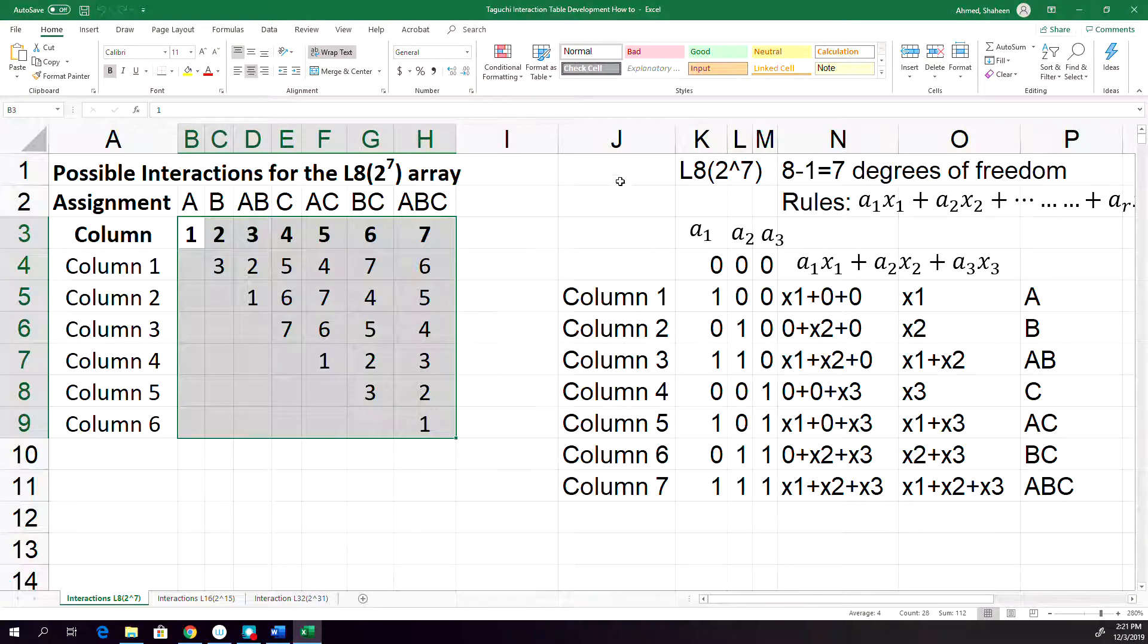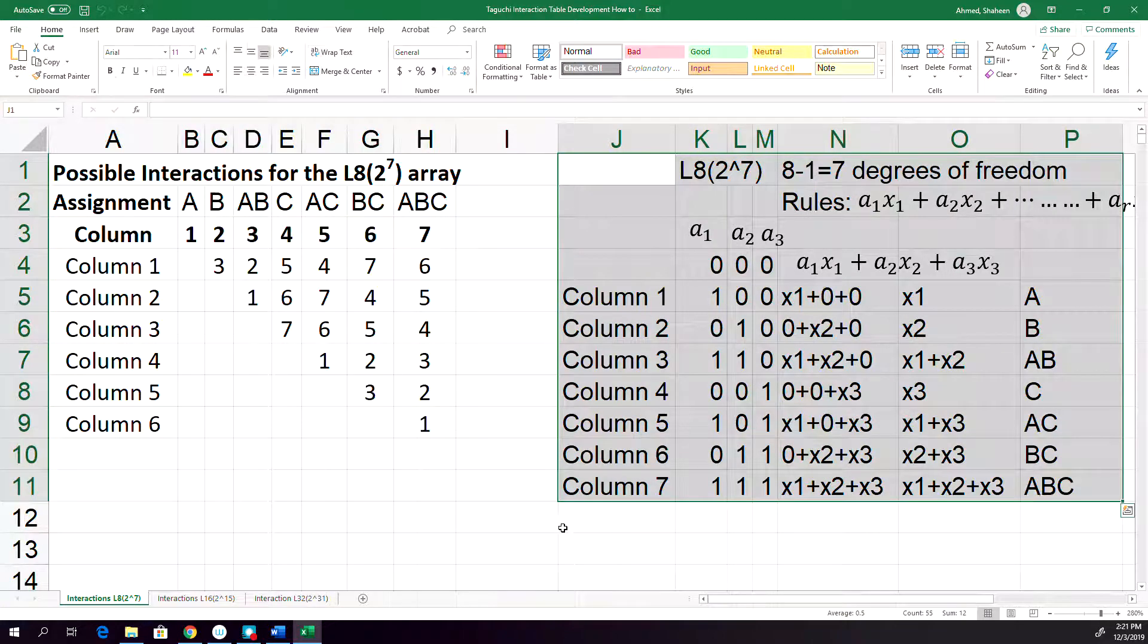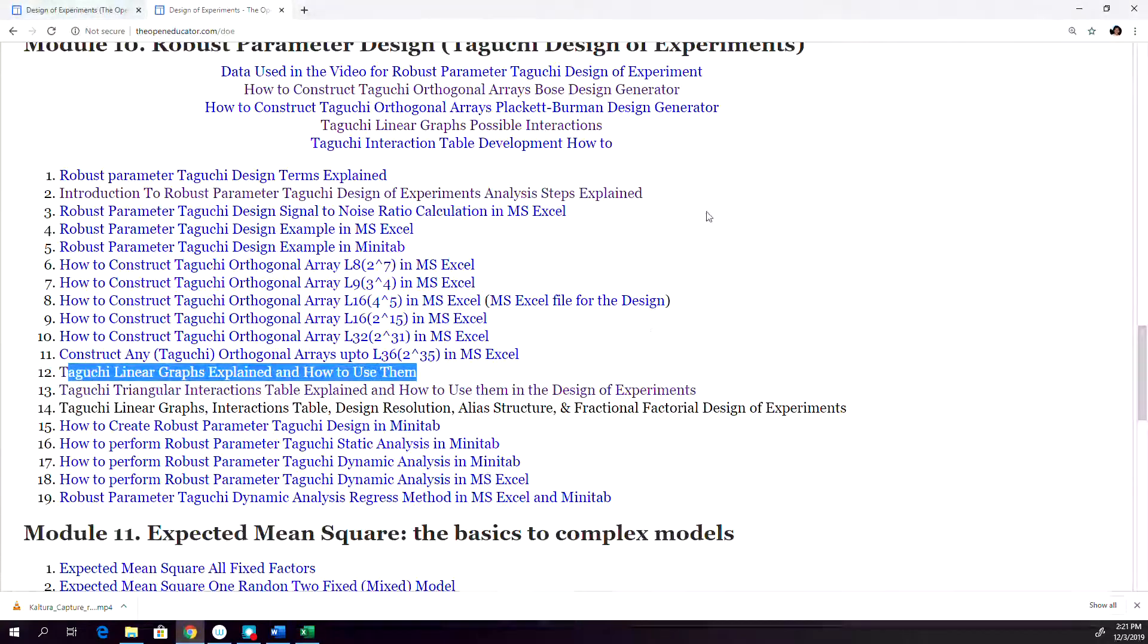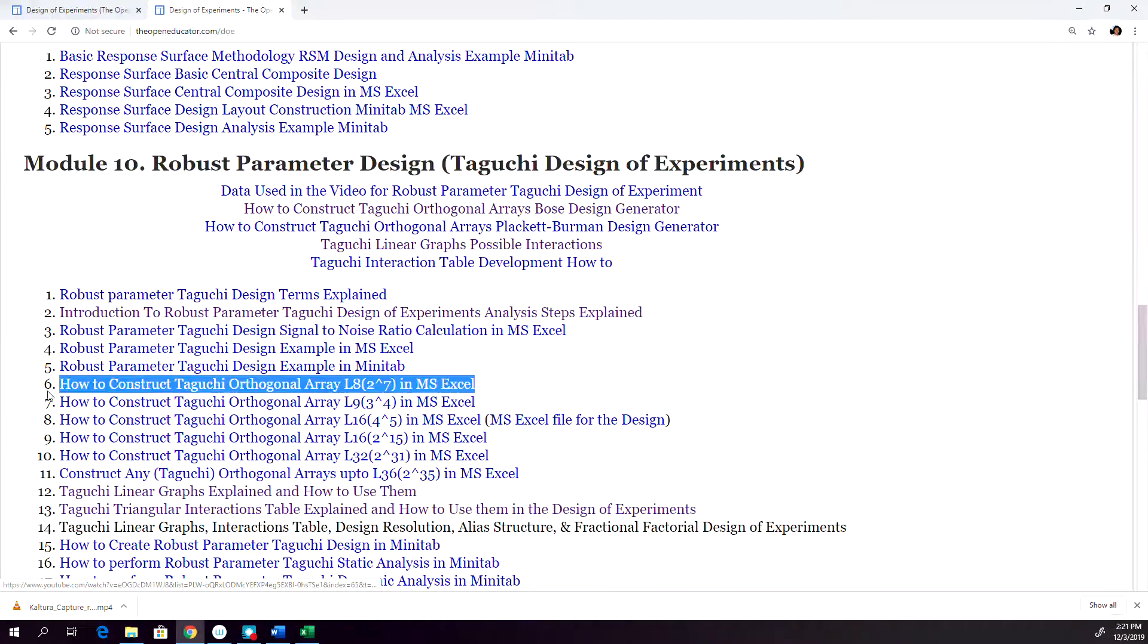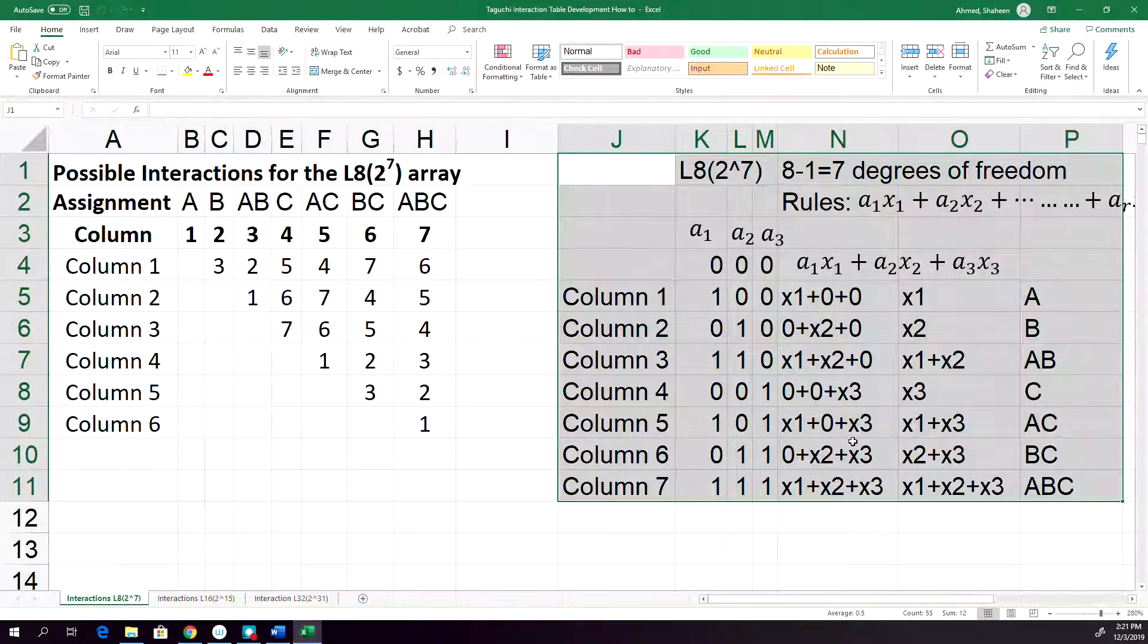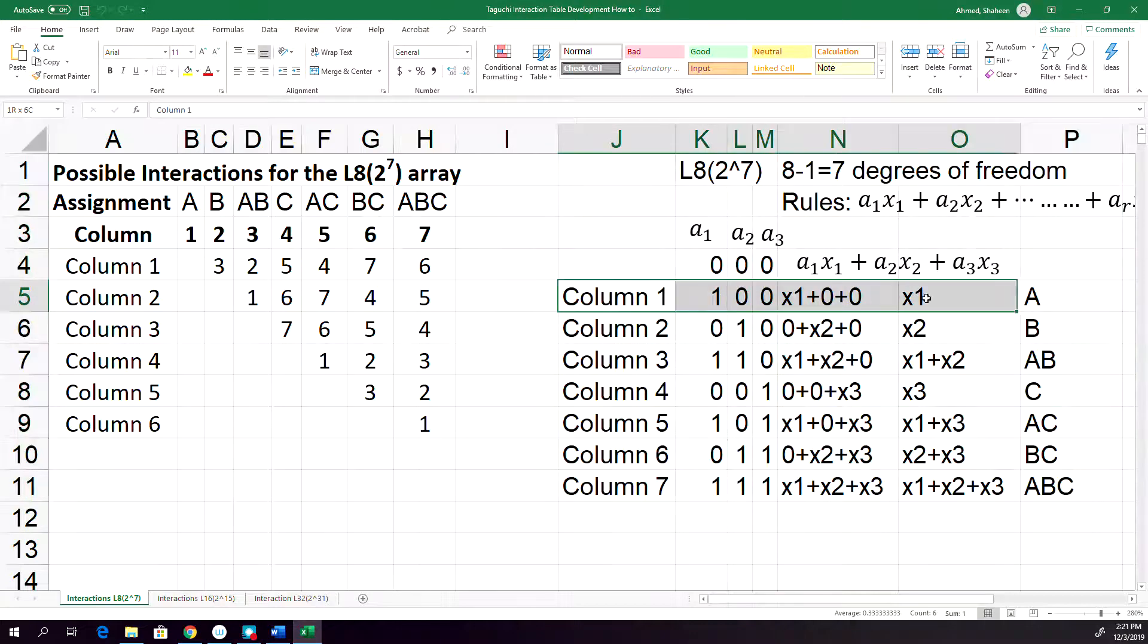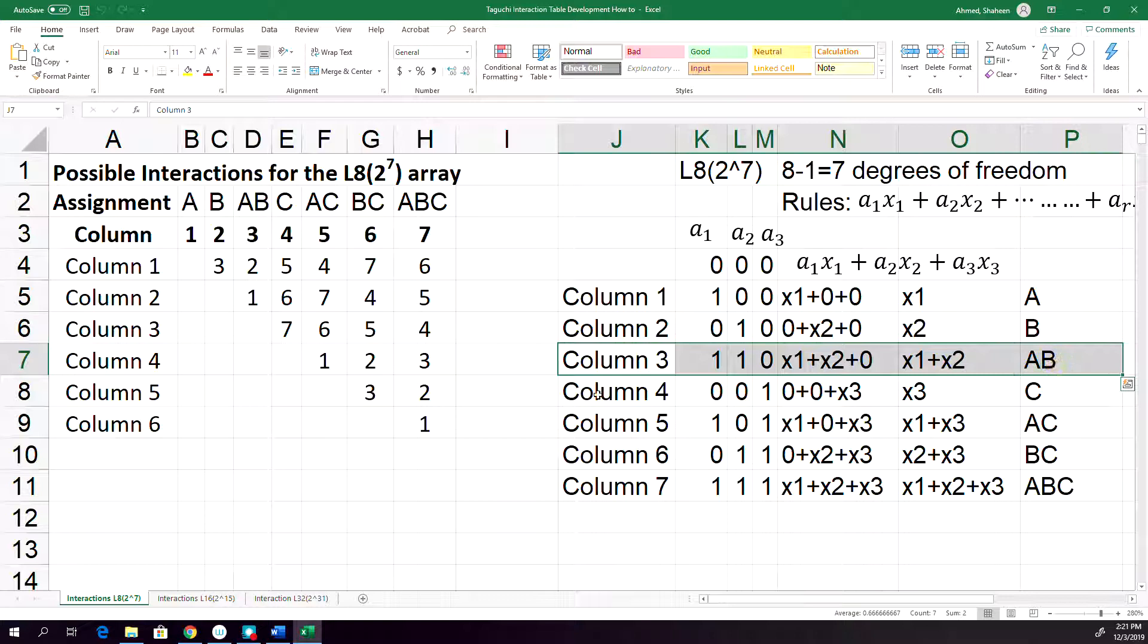If you remember this orthogonal L8 array, the way we curated this one using the BOSS generator - you can check how to do that in this video of L8 orthogonal array. When we curated that, you can see the column and the associated factors right here and how they are created.